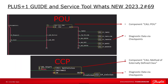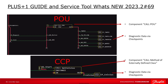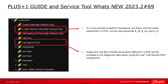This is needed to partially follow the standard and to prepare support for parallel tasks in the future. After 23.1 we look at Guide version 23.2, where the biggest change is the possibility to define diagnostic data inside a POU and CCP. In previous Guide versions it was only possible to define diagnostic data in the drawing area of Guide, where signals had to be transferred via the output bus interface and checkpoints created manually.